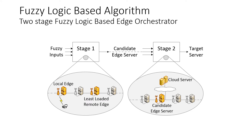Now I want to explain our fuzzy logic-based solution. Our solution consists of two stages. In the first stage, we try to find the best candidate server among the edge servers. In the second stage, we select either the candidate edge server or the cloud server. You may ask why we use two stages for this decision-making system — I will explain the reason after giving some more details about fuzzy logic.